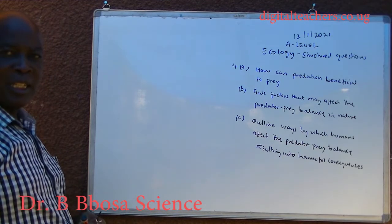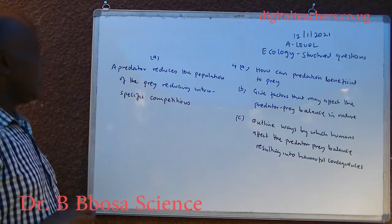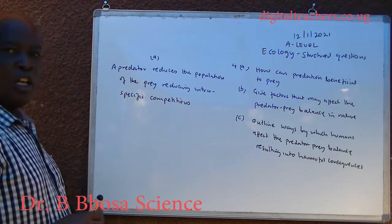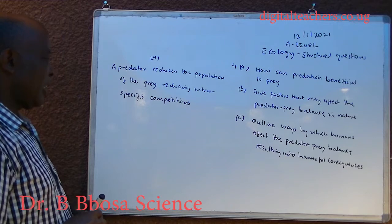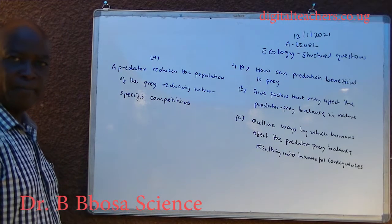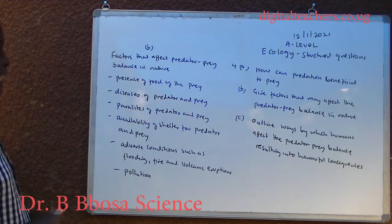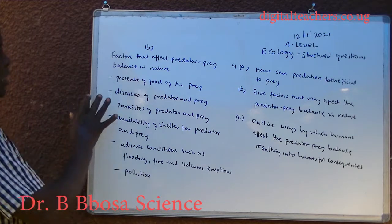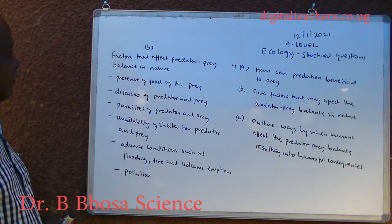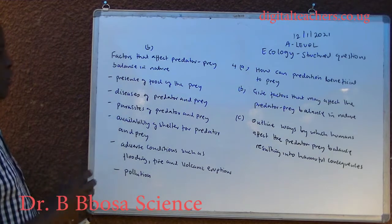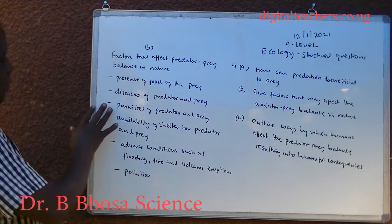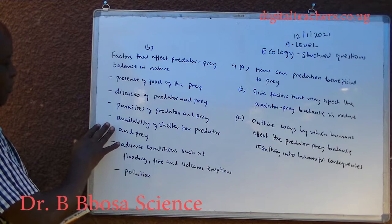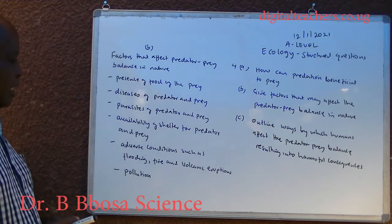You can pause and answer. A. A predator reduces the population of the prey, reducing intraspecific competition. B. Factors that affect predator-prey balance in nature: presence of food for the prey, diseases of predator and prey, parasites of predators and prey, availability of shelter for predator and prey.